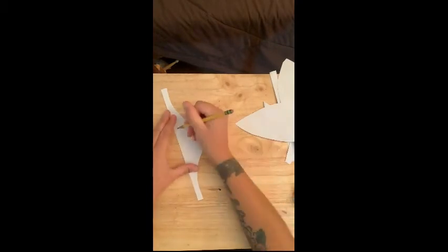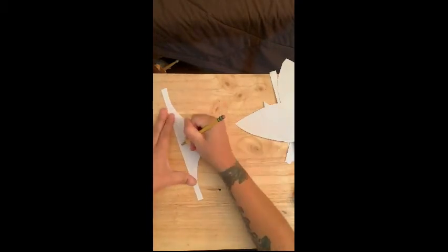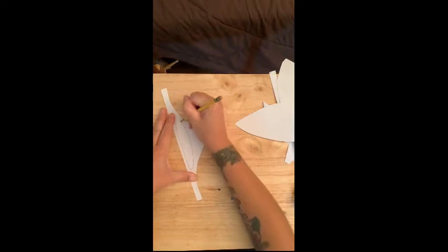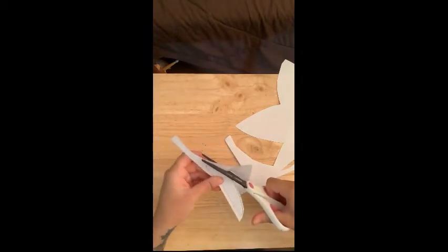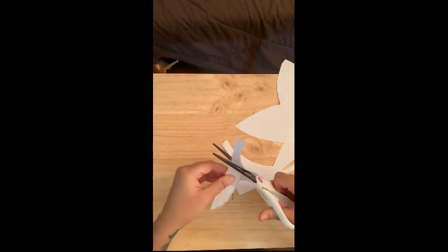If you want to start with pencil first you can. But it's just going to be kind of like a long oval. I'm just going to make like a long oval on my scrap paper. And this will be the body of my butterfly.